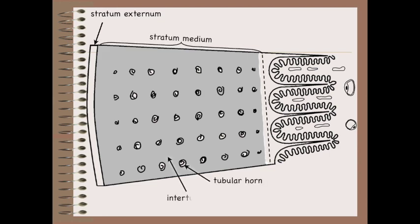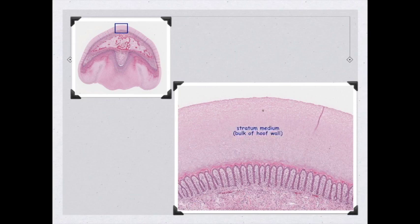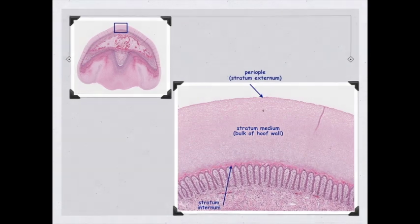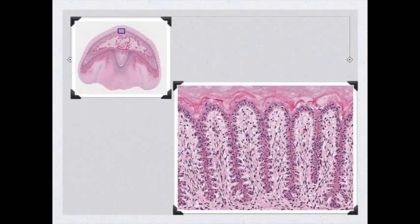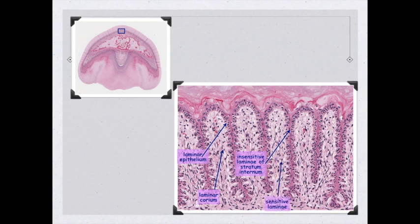In this illustration we see the stratum externum, the stratum medium, and the innermost non-pigmented stratum internum, showing both the tubular and inter-tubular horn. In a histological section we can identify the stratum medium, the stratum externum, and the stratum internum with a close-up look at the lamellae. The insensitive laminae consist of the stratum internum, while the laminar corium makes up the sensitive laminae.